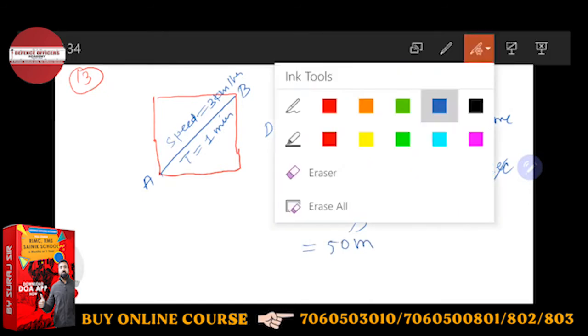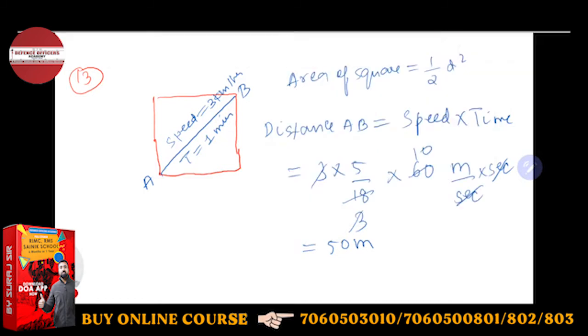You have to find the area. Area is nothing but half into product of its diagonal. So therefore, area will be half into product of its diagonal, which means half into d square. So that will be half into d, which is 50 into 50.